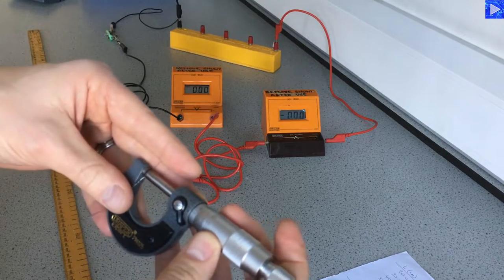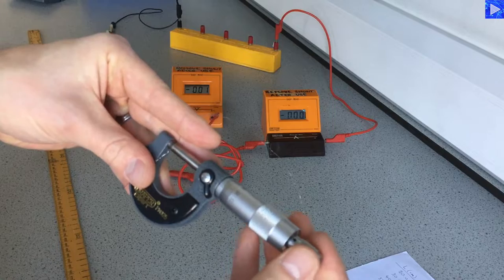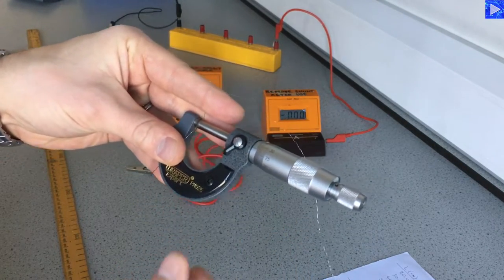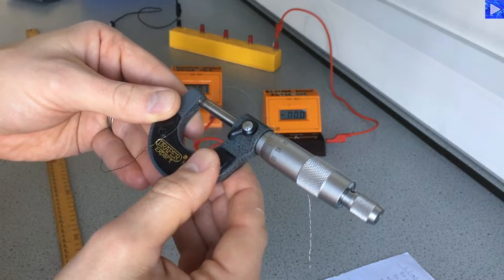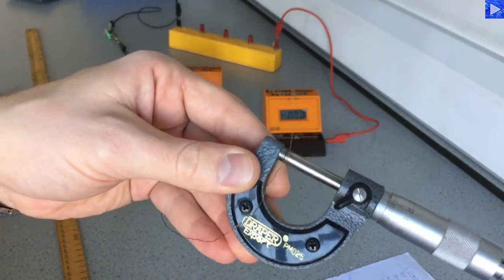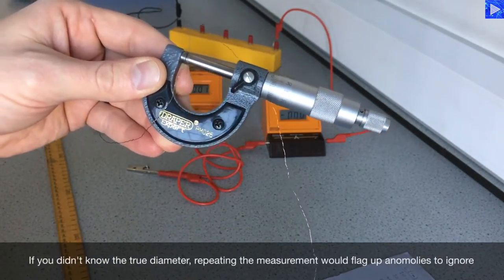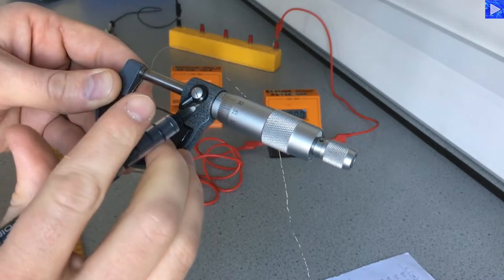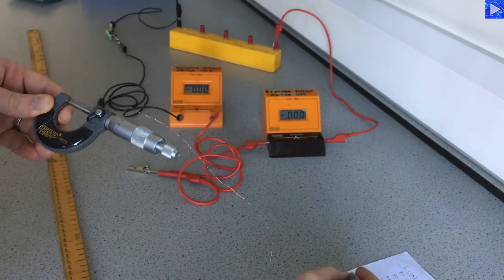I am going to go to another section of the wire that is a bit straighter. Now that is 0.27 which is much more realistic for this wire. I know that this wire is about 0.30 millimetres. So I have got that as 0.27. So I am going to write that down.